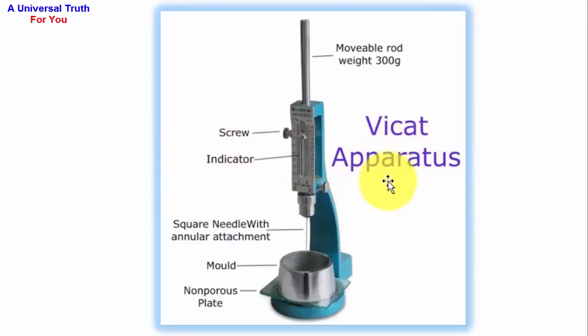This is the picture of Vicat apparatus. In it: movable rod weight 300g, screw indicator, square needle with annular attachment, mold, porous plate.